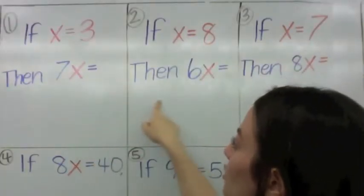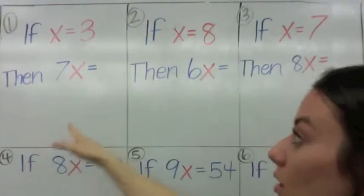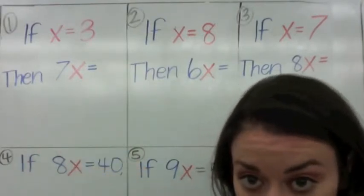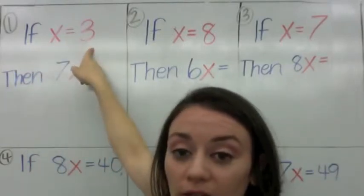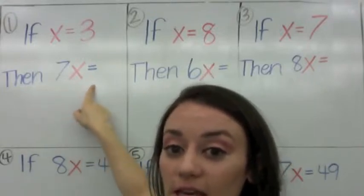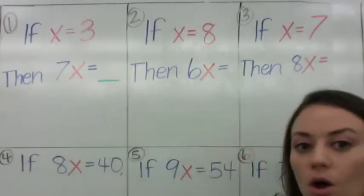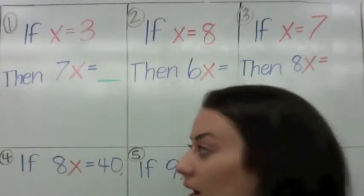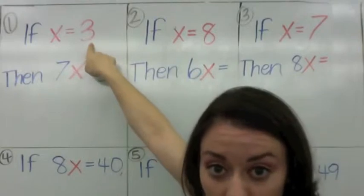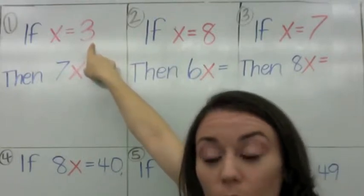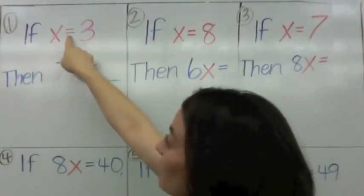So in problems one, two, and three, we're going to use SUBSTITUTION to solve these problems. Number one says: if X equals 3, then 7X equals what? So that's what we're trying to find. When you look at this problem, what is the number? What is X? X is 3 — see that red number? So what letter are we talking about? We're talking about X. X equals 3, so I made the 3 red and the X red.